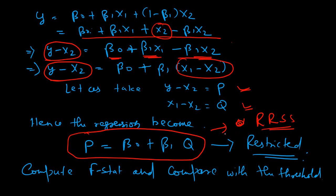In the earlier unrestricted case the RSS was unrestricted. We plug both the restricted and unrestricted RSS into the F-statistic formula shown previously, compute the F-statistic value, and then — similarly to the t-test — compare it with a threshold value from the F-statistic table to decide whether the null hypothesis is accepted or rejected. That is essentially how we use F-statistics, and this is the logic and theory behind using F-statistics for multiple hypothesis testing.